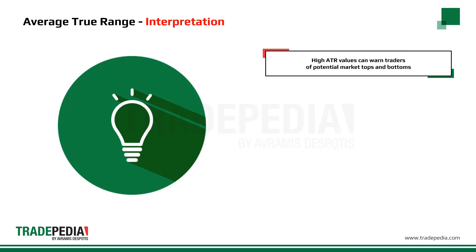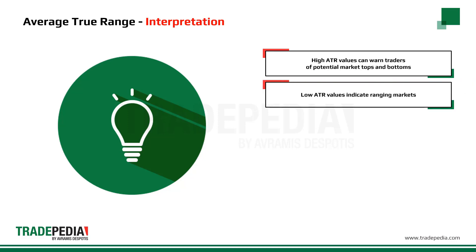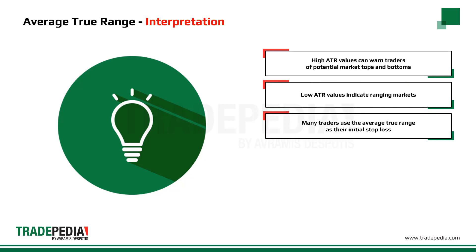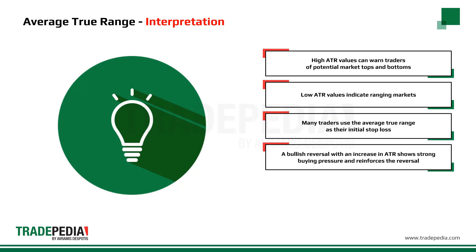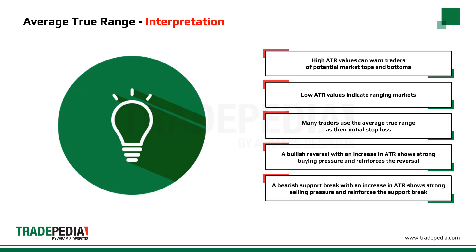High average true range values can warn traders of potential market tops and bottoms. Low average true range values can also indicate ranging markets. Many traders use the average true range as their initial stop loss. A bullish reversal with an increase in ATR shows strong buying pressure and reinforces the reversal. A bearish support break with an increase in ATR shows strong selling pressure and reinforces the support break.